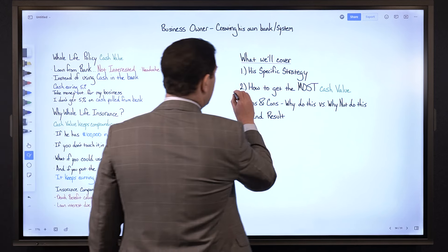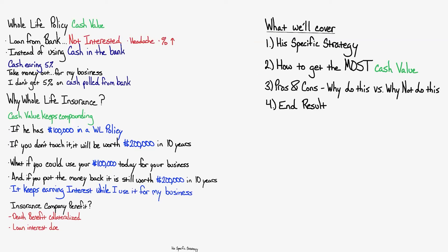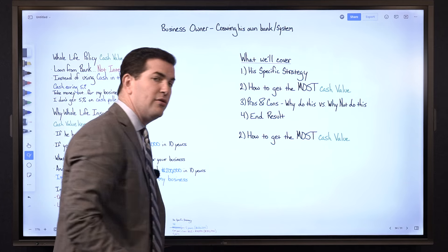Number two: how to get the most cash value possible. So this is the most important piece when it comes to any whole life insurance policy. When people have buyer's remorse, it's never around the loan.